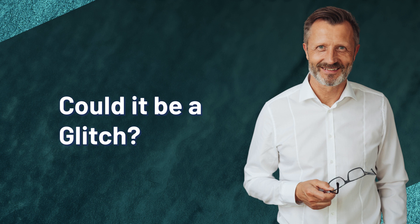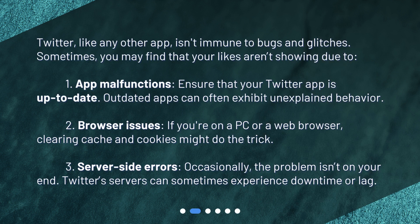Could it be a glitch? Twitter, like any other app, isn't immune to bugs and glitches. Sometimes you may find that your likes aren't showing due to app malfunctions — ensure that your Twitter app is up to date, as outdated apps can often exhibit unexplained behavior. If you're on a PC or a web browser, clearing cache and cookies might do the trick. Occasionally, the problem isn't on your end: Twitter servers can sometimes experience downtime or lag.